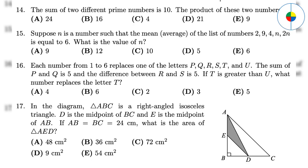Question 14: You need to figure out the two prime numbers first. There are only 2, 3, 5, 7, which are prime numbers under 10. 3 plus 7 equals 10, so the answer is 3 times 7 equals 21. Question 15: 2 plus 9 plus 4 plus n plus 2n over 5 equals 6, so n equals 5.